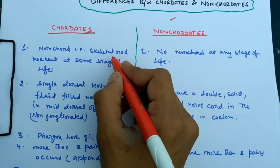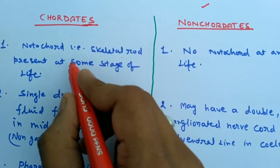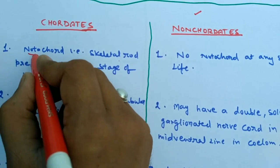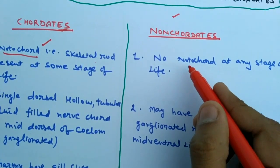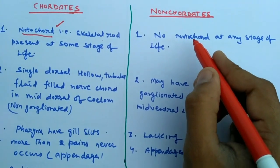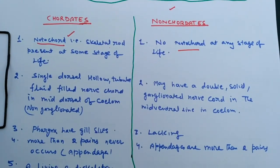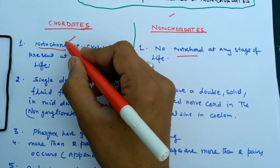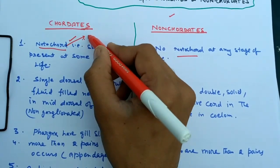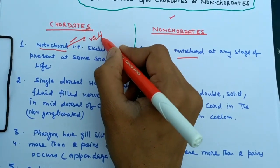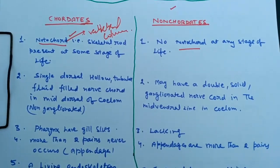The first difference: chordates have a skeletal rod-like structure called the notochord, while in non-chordates this structure is lacking — no notochord occurs at any stage of their life. In the higher chordates or adults, the notochord changes into the vertebral column, that is called the spine, composed of various types of vertebrae.